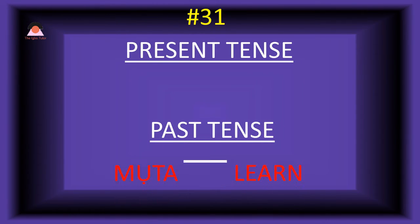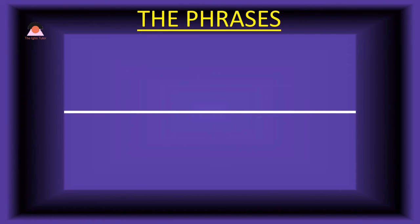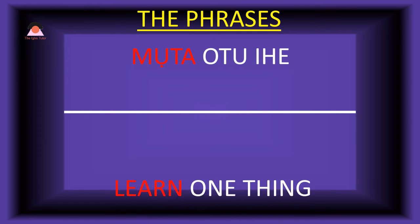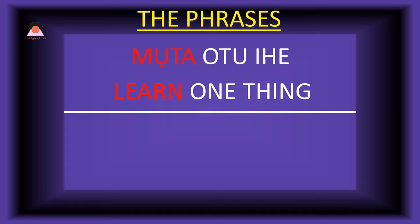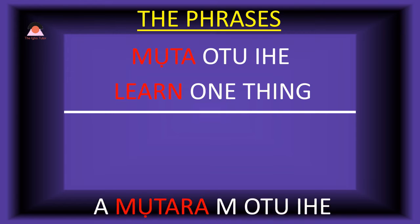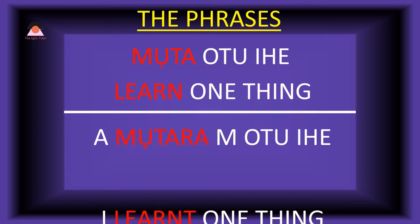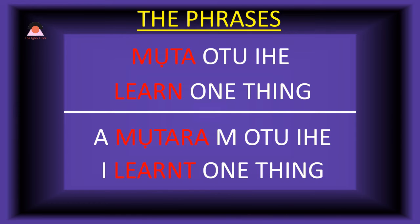Word number thirty-one: 'mota,' meaning 'learn.' The past tense of mota is 'motara,' meaning 'learned.' Present tense phrase: 'mota otu ihe' — learn one thing. Past tense: 'a-motara m'otu ihe' — I learned one thing.